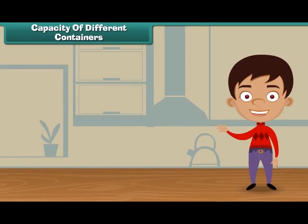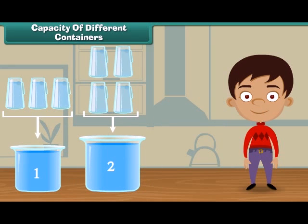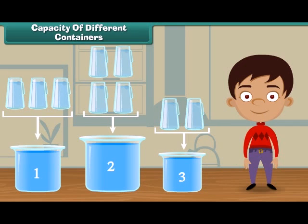Friends, we have seen that vessel one is filled with three jugs of water, vessel two is filled with four jugs of water, and vessel three is filled with two jugs of water. It means vessel three holds least water, and vessel two holds most of the water.